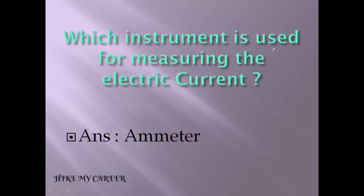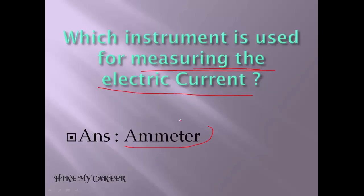Which instrument is used for measuring the electric current? Measuring the electric current means the answer is ammeter. Ammeter is used for measuring the electric current.